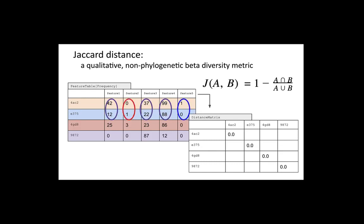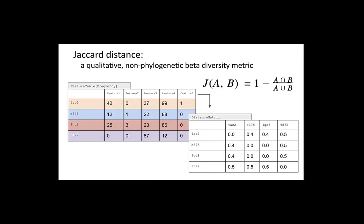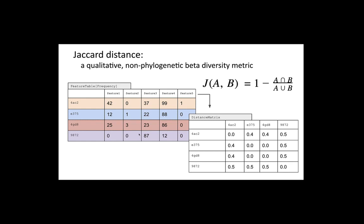The matrix fills in symmetrically, with the diagonal all zeros since we're comparing each sample to itself. Something you'll notice about this Jaccard matrix is that we don't actually see a lot of differences — distances range only from 0.4 to 0.5. There's not much distinguishing the samples. Although if we just glance at the data table, we might think we'd see more differences, especially between the purple sample and some others, because it has a lot more zeros and very different feature distributions. In this case, Jaccard isn't going to be the best metric to distinguish that odd difference.